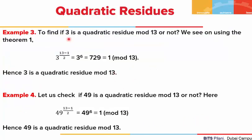In the third example, a is 3 and p is 13. 3^((13-1)/2) = 3^6 = 729. 729 minus 1 is 728, which is divisible by 13. So 3 is a quadratic residue mod 13.